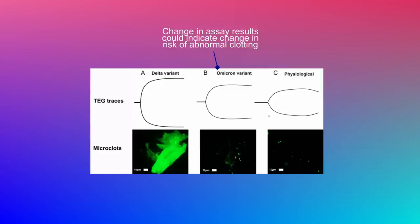This might also explain why delta was much more deadly than omicron. Ever since omicron came about, the disease state for infected individuals became much better. This might help explain why — because these individuals are less likely to form extreme abnormal clots. We could potentially use this type of assay to keep following future variants as well and see whether pathogenicity is increasing or not.